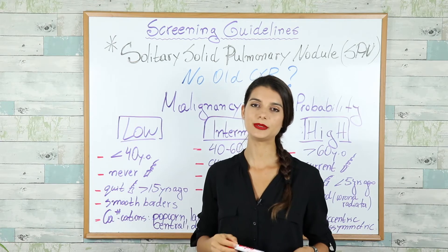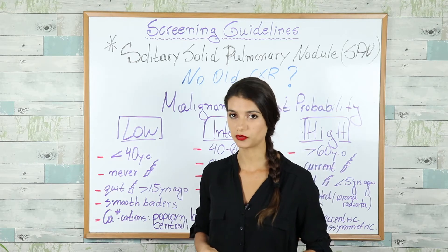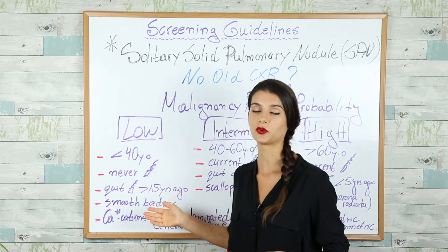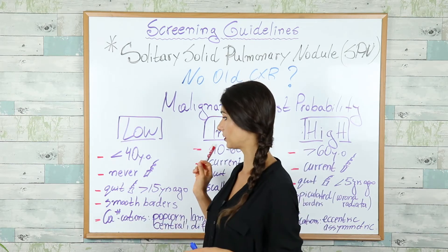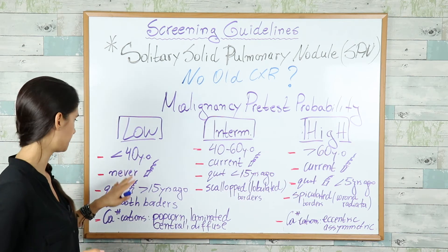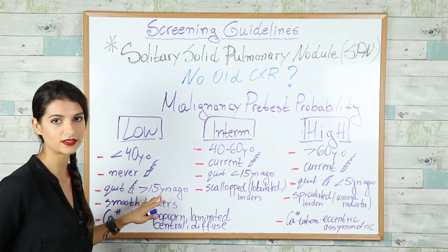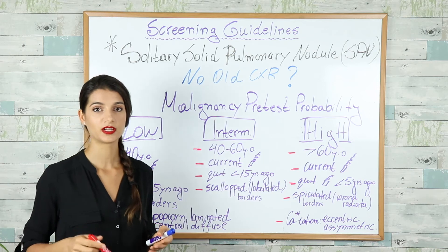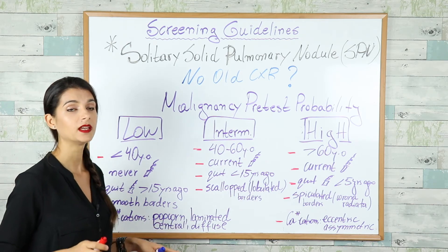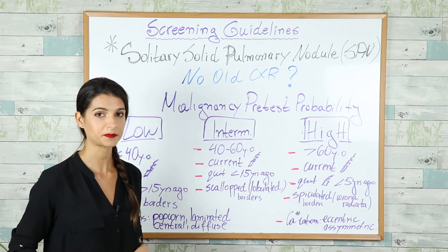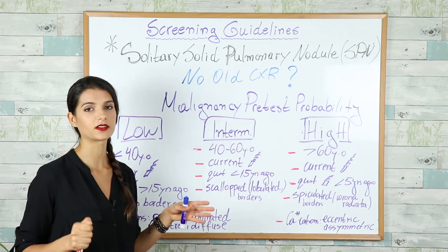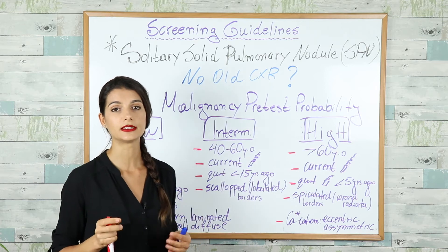If the patient has no old imaging studies, we manage the nodule based on size and malignancy pre-test probability — a combination of patient risk factors and nodule characteristics. Patients at low malignancy pre-test probability are less than 40 years of age, have never smoked or quit more than 15 years ago, and the nodule has smooth borders. If the nodule has popcorn-like calcifications, it's most likely a hamartoma — benign. Laminated, central, or diffuse calcifications are seen in tuberculosis and histoplasmosis infections.